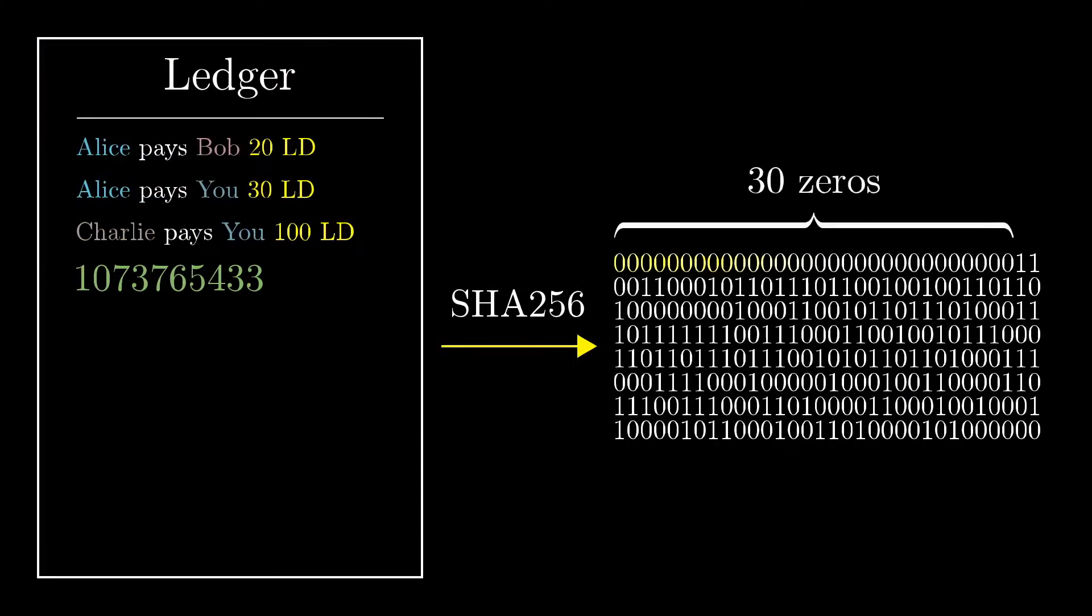How hard do you think it was for them to find that number? Well, for a random message, the probability that a hash happens to start with 30 successive zeros is 1 in 2 to the 30, which is about 1 in a billion.